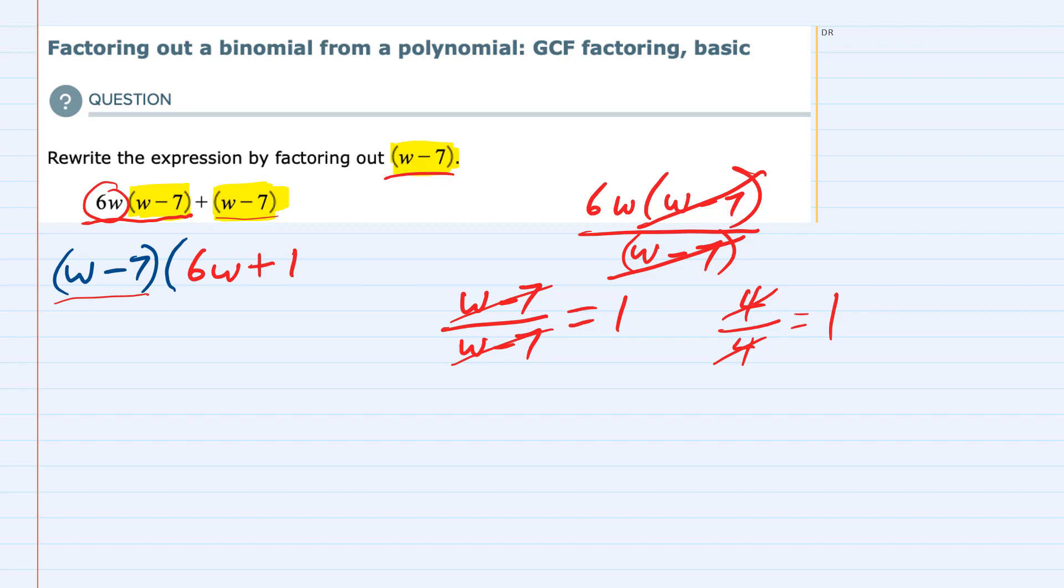So 1 is what we have left. Just to check our answer here, (w - 7) is being multiplied by 6w, which is the original first term that we started with, that's 6w times (w - 7). But not only is this factor being multiplied by the first term, it's also being multiplied by the second term.